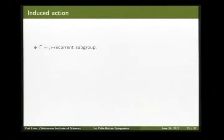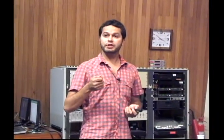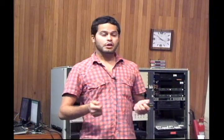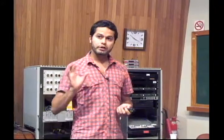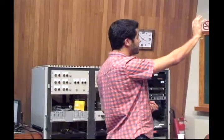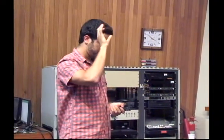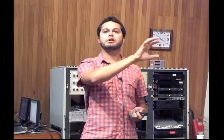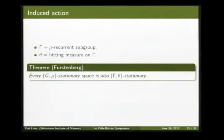Now we have a way of defining the induced action. Given a recurrent subgroup, since the random walk hits Γ almost surely, we can look at the distribution of the positions at hitting times. We push forward the measure μ to a measure on Γ, which gives exactly the distribution of the hitting positions. This is called the hitting measure of Γ, and it is the natural measure to consider on recurrent subgroups.